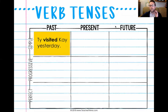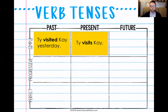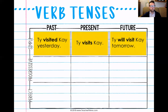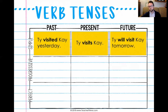Looking at our chart: simple past — 'Ty visited Kay yesterday.' Simple present — 'Ty visits Kay,' because that's something happening right now. And simple future — remember, it's going to use the helping verb 'will' — so 'Ty will visit Kay tomorrow.' Simple past: Ty visited. Simple present: Ty visits. Simple future: Ty will visit.